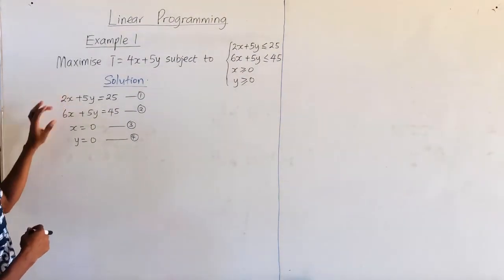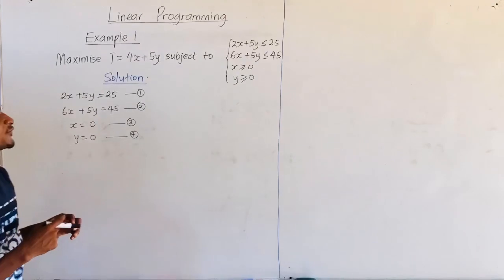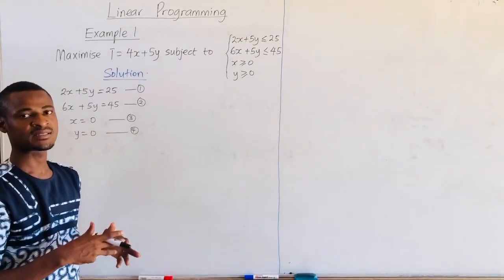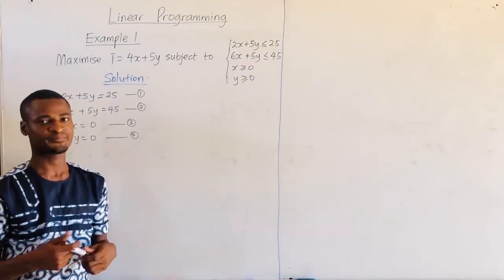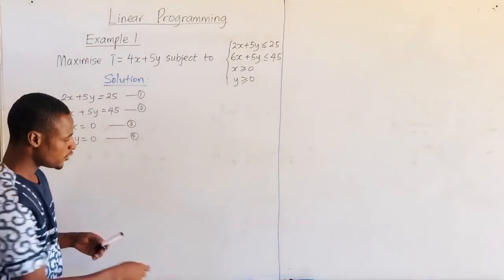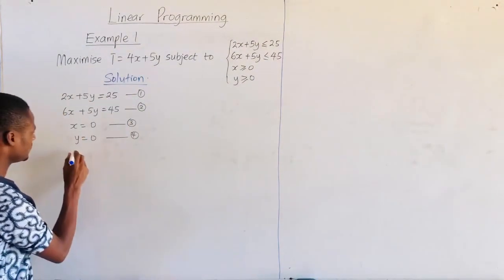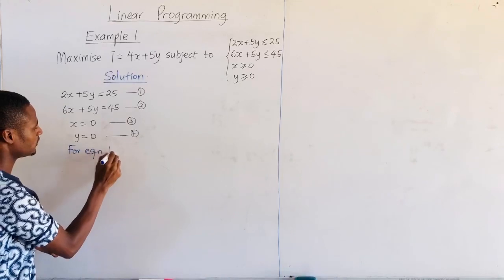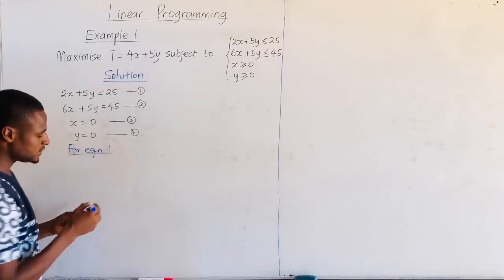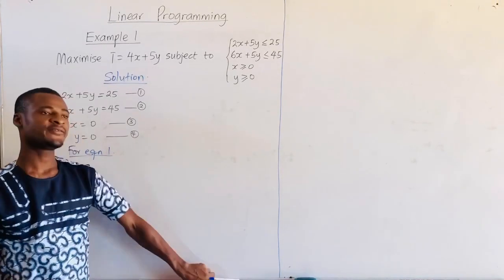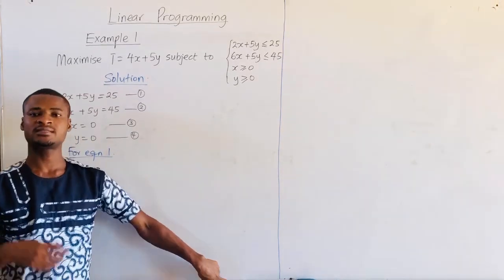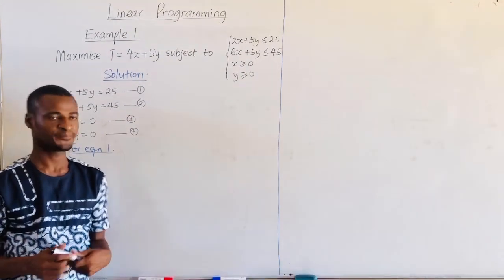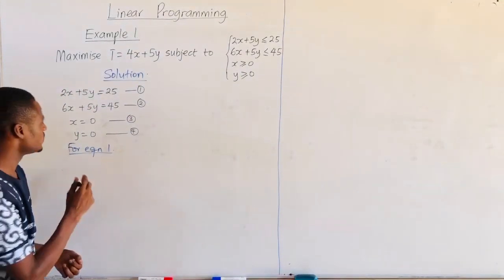So we would have 2x plus 5y is equal to 25 as our first equation, 6x plus 5y is equal to 45 as our second equation. x is equal to 0 is our third equation, and y is equal to 0 is our fourth equation. Now, all these four equations are linear equations, and so they will give us a straight line when plotted on a graph. The first and second equations have two variables, so we need two points to draw this graph.